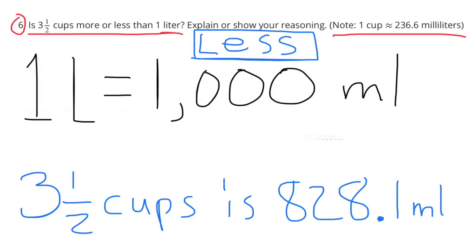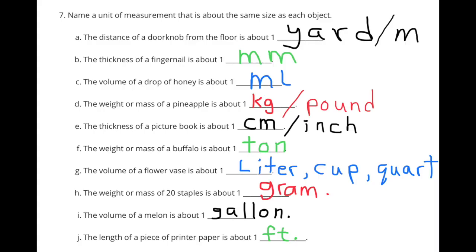Number 7: Name a unit of measurement that is about the same size as each object. a) The distance of a doorknob from the floor is about a yard or a meter. b) The thickness of a fingernail is about 1 millimeter. c) The volume of a drop of honey is about 1 milliliter. d) The weight or mass of a pineapple is about 1 kilogram or 1 pound.